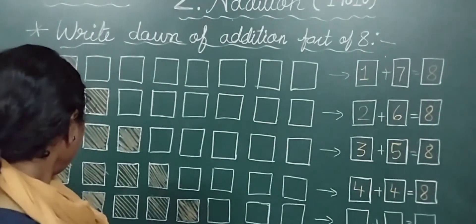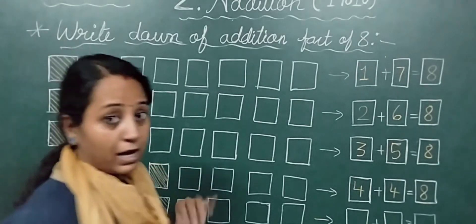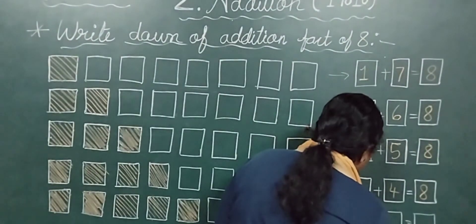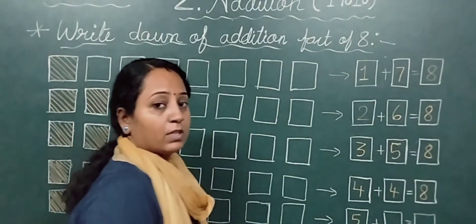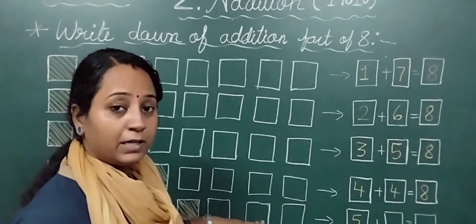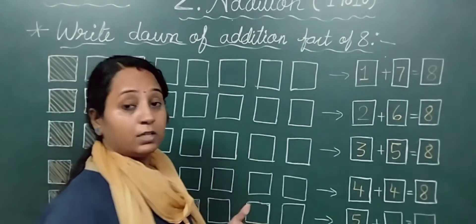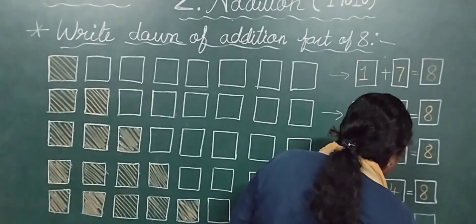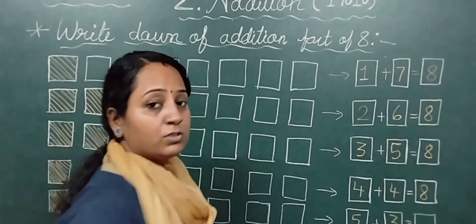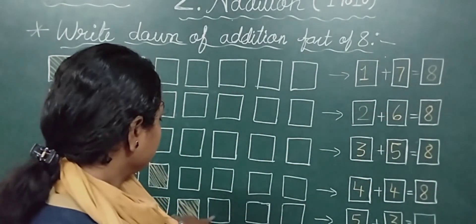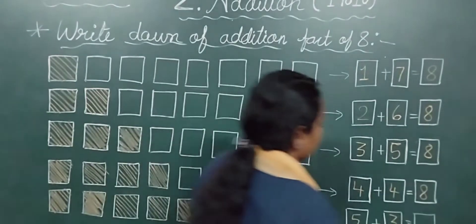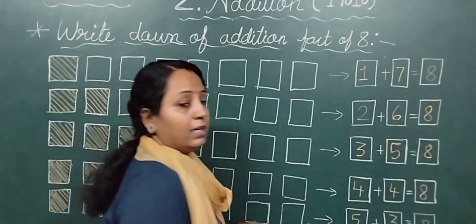Next. How many colored boxes are here? 1, 2, 3, 4, 5. So I will write here 5. Now how many plain boxes? 1, 2, 3. So I will write here 3. Now how much is the answer? 5, 6, 7, 8. Answer is 8.